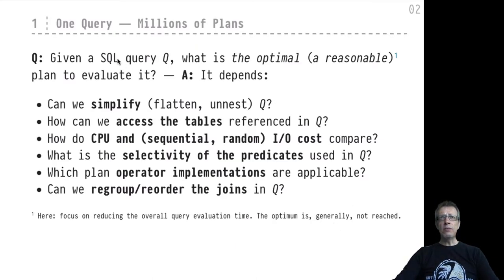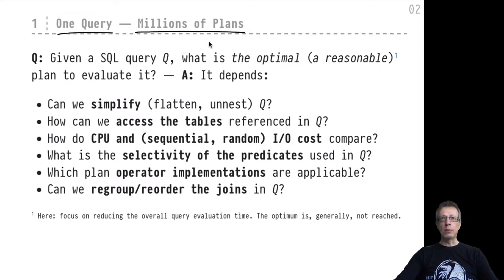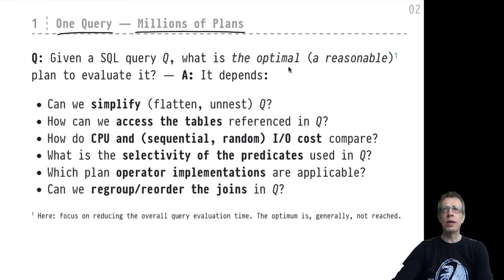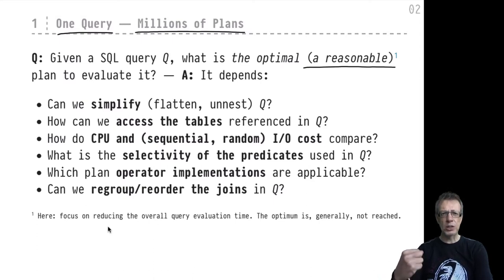Given one SQL query, there will be literally millions of opportunities to evaluate it. Which of these millions of plans would be the optimal plan to pick? That's where the name query optimization comes from. We would like to pick the plan that is truly optimal — but as we will see, that's typically impossible. What we will be able to do is pick a reasonable, really good plan that avoids the really bad plans. So what we do here is not really query optimization but query improvement.